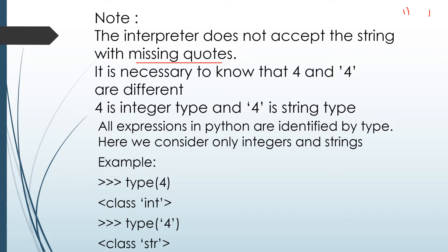Now, coming to expressions: all expressions in Python have a type, and this type indicates the kind of expression it is. An expression's type is sometimes called its class. There are two types here — integer type and string type. For example, 4 is an integer, while '4' in single quotations is a string type.